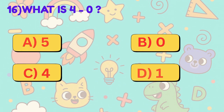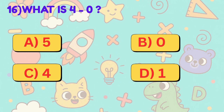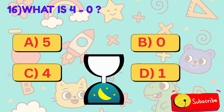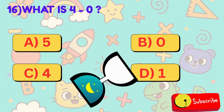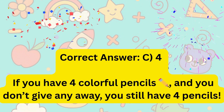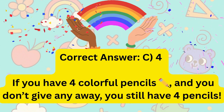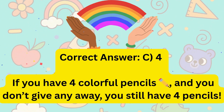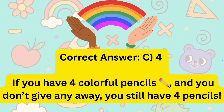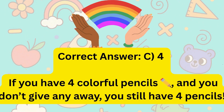16. What is 4 minus 0? Is it A, 5, B, 0, C, 4, or D, 1? Correct answer is C, 4. If you have 4 colorful pencils and you don't give any away, you still have 4 pencils.